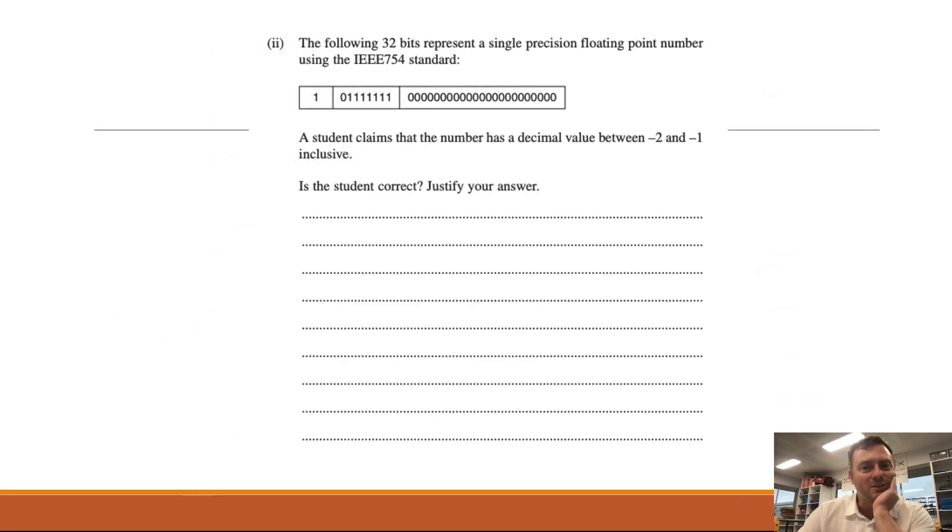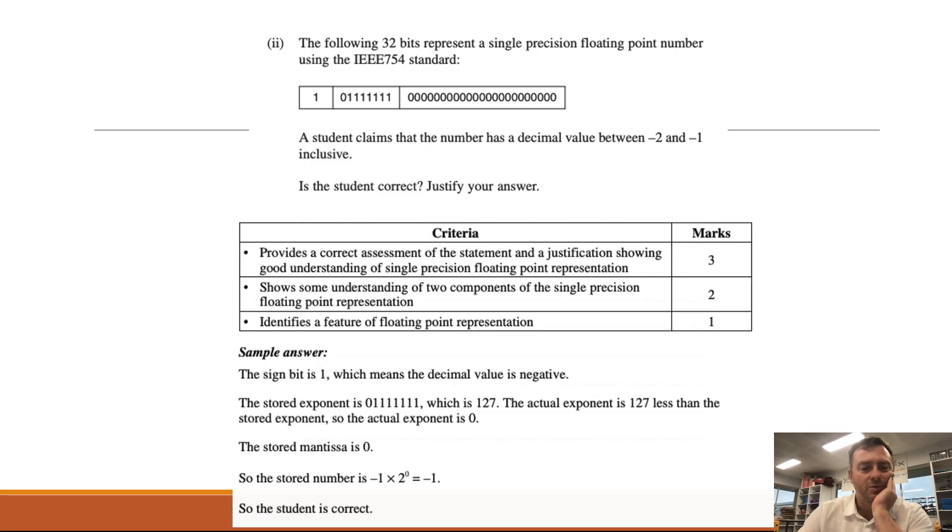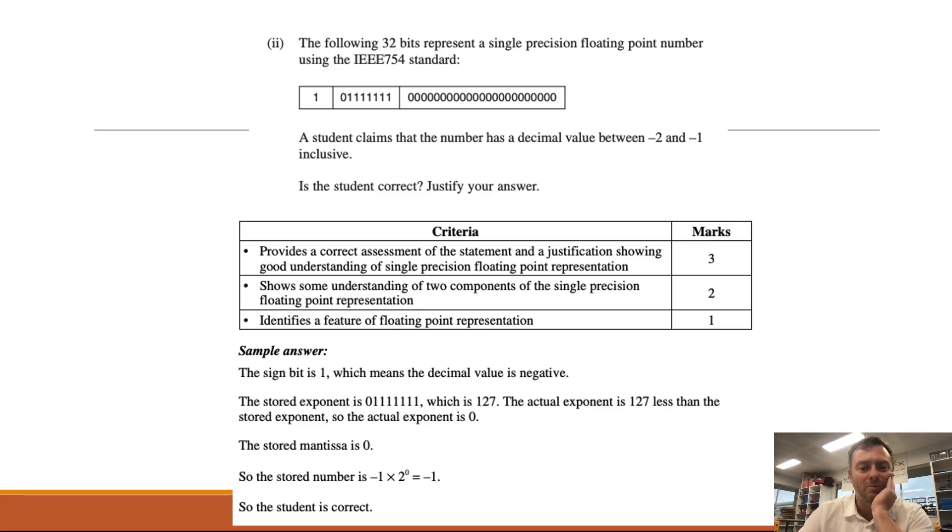The following 32 bits represents a single floating point number which for IEEE. The student claims the number has a decimal value between negative 2 and negative 1 inclusive. Is the student correct? So then you unpackage it. So the sign bit is 1 which means the decimal value is negative. The stored value of the exponent is 01111111 which is the same as 127. So the actual exponent is 127 less than because we use the negative bias shift. So the actual exponent is then set to 0. The number stored then is negative 1 times 2 to the power of 0. So therefore the student is correct.